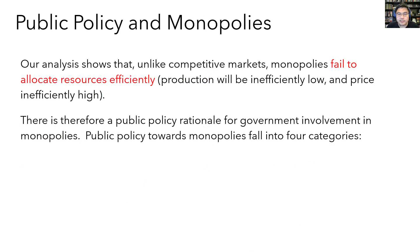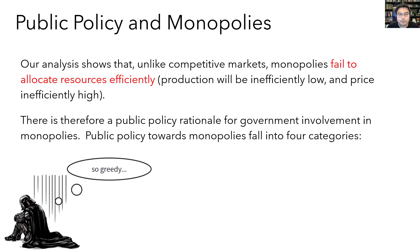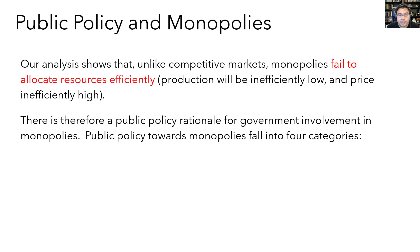The conclusion of our analysis is that unlike perfectly competitive markets, monopolies fail to allocate resources efficiently — the amount of production is going to be too low. Monopolists produce an inefficiently low quantity and set an inefficiently high price, so total surplus will not be maximized. There are potentially beneficial trades between the monopolist and consumers that don't happen because the monopolist wants to maintain a higher price. This inefficient behavior by monopolists forms the basis of a public policy rationale for the government to step in and regulate monopolists.